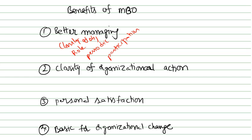The next benefit is clarity of organizational action. MBO tends to provide key result areas where organizational efforts are needed. Organizational objectives are designed clearly and they relate with the organization's key result areas.